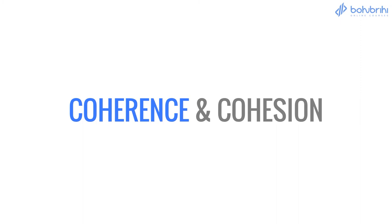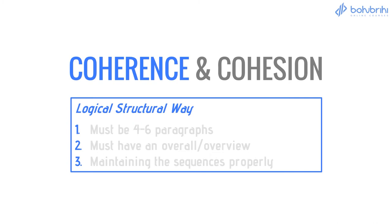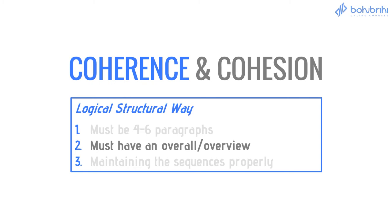For Cohesion and Coherence, you need to write in a logical and structural way. IELTS cohesion and coherence is always about logical and structural writing. You should be able to read through the paragraphs clearly. You will need to write at least 4 paragraphs. This applies to both academic and general training, and your writing must have an overview or overall statement.